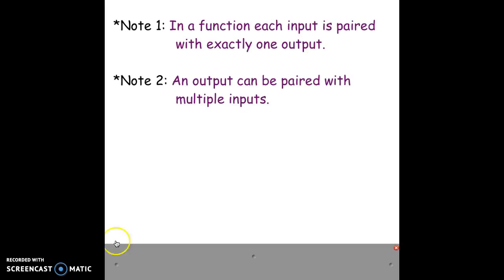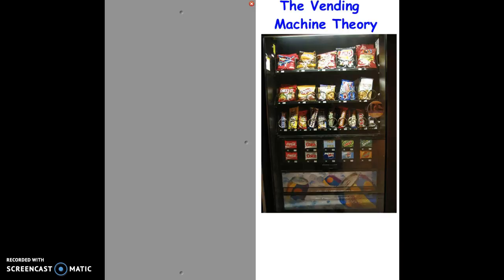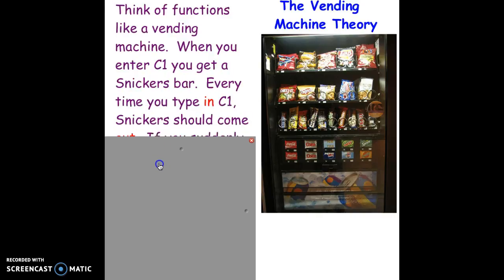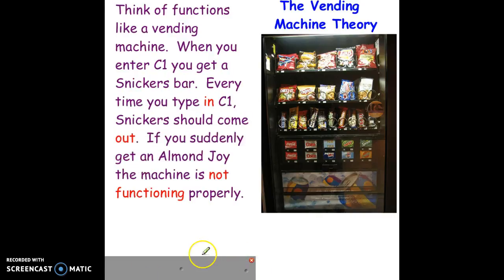Think of functions like vending machines. When you enter C1 and you get a Snickers bar, every single time you type in C1 you should get a Snickers. If you suddenly get an Almond Joy, the machine is not functioning properly. So every time you put in a 3 into a function, for example, if the first time you get 7, every single time you should get 7. If you get something different - one time 7, one time 9, one time 13 - it's not functioning properly.